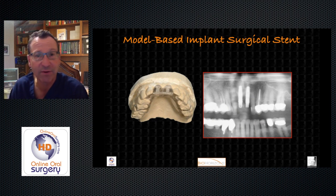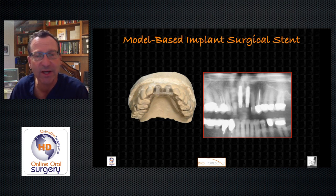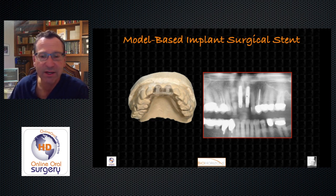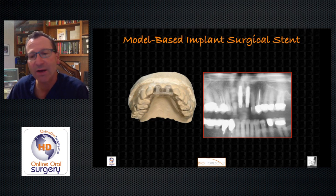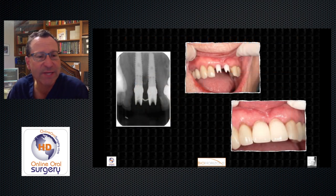The surgical guide had channels through the pontics indicating the path of the long axis of the implant coming out in the cingulum area for the central incisors. On the post-op film — actually this is the second stage film when we placed the provisional abutments — the implants are nice and parallel, nicely spaced, and this is a nice aesthetic and functional result.